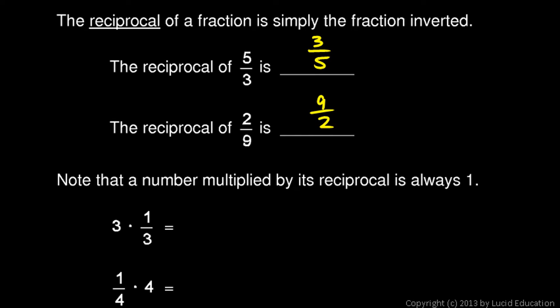And then note that a number multiplied by its reciprocal is always 1. So here's 3, and the reciprocal of 3 is 1 third. Those two will multiply together to equal 1. And you can see that if you remember that the 3 is 3 over 1, and that these reduce. You see, this 3 and this 3 would cancel out and just become 1. So 1 times 1 is 1, 1 times 1 is 1, and 1 over 1 is just 1.